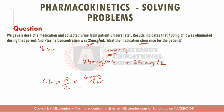The concentration is 25 milligrams per liter. The units will be liters per hour. So: 400 divided by 8, divided by 25, equals 2 liters per hour. Make sure your units are correct.